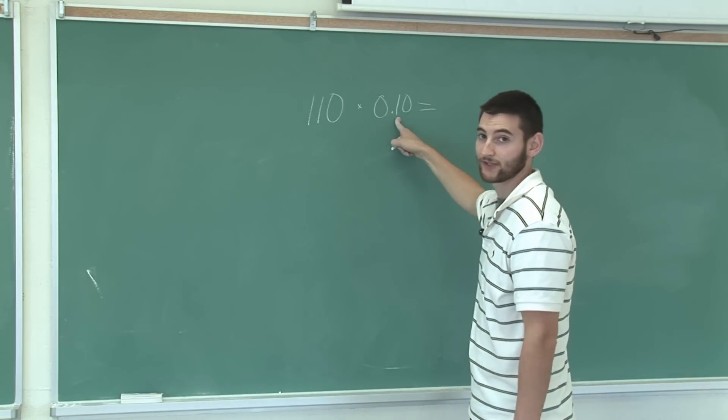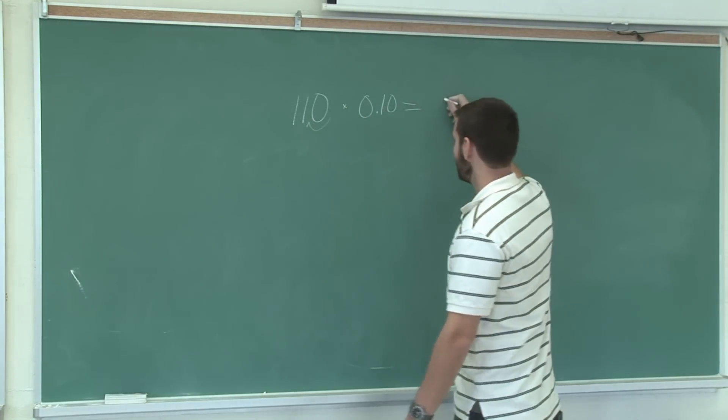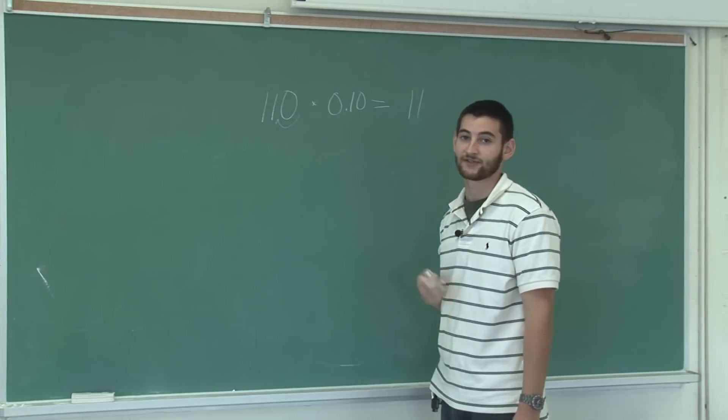This is the same as moving the decimal place one place over. So from here we go to there. That equals $11. So the discount itself is $11.